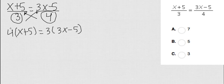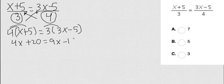So now I have 4 times x and then 4 times 5, which is 20, and then this is going to be 9x and then this is 15.